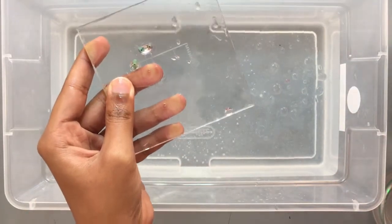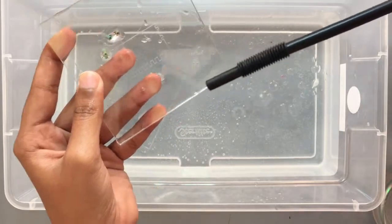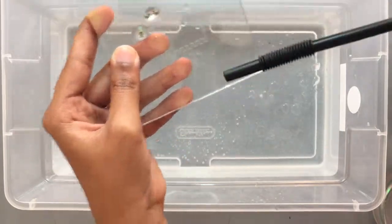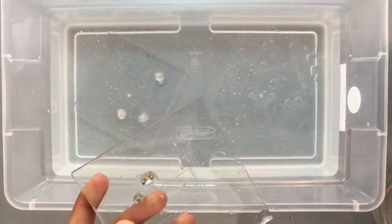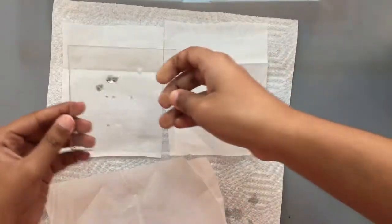Use compressed air to remove the rubbing alcohol and water until the chip is dry. Place the clean chip layer on a paper towel or kim wipe.